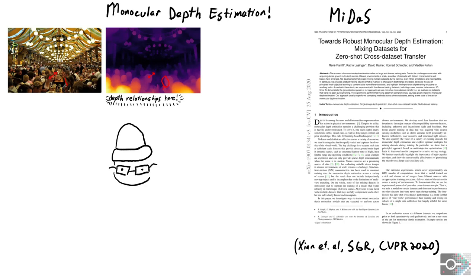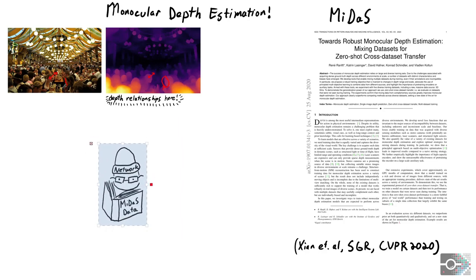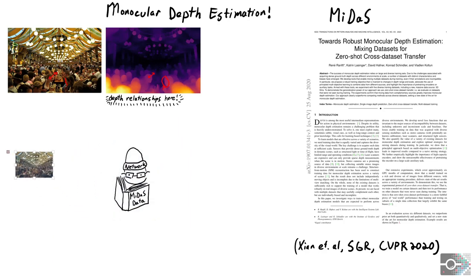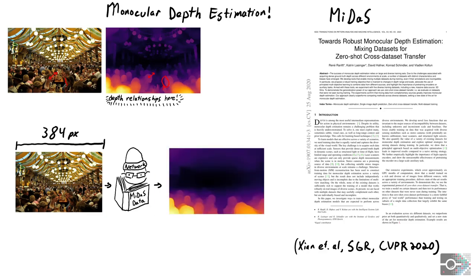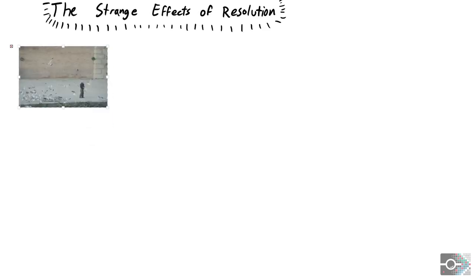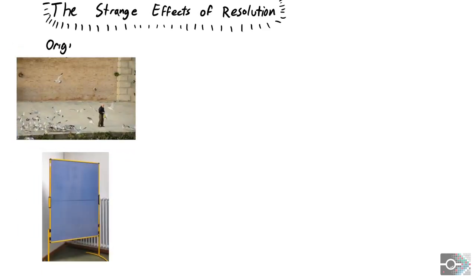MIDAS uses a fully convolutional architecture trained on a variety of datasets. The original MIDAS implementation resizes the biggest dimension of the input image to the training resolution while keeping the aspect ratio, then feeds the image to the network. When we instead feed the same image to the network at different resolutions, some interesting patterns arise.